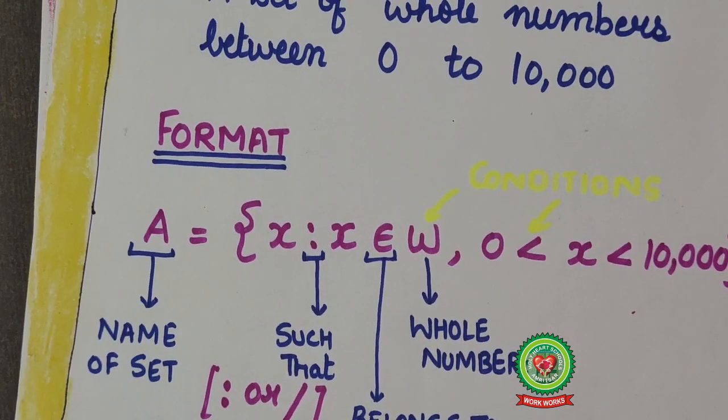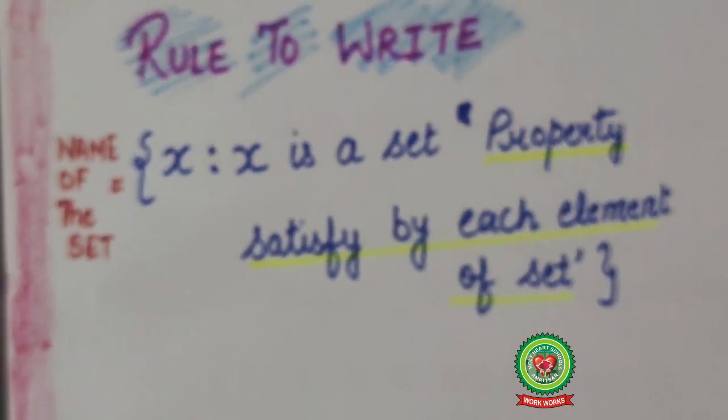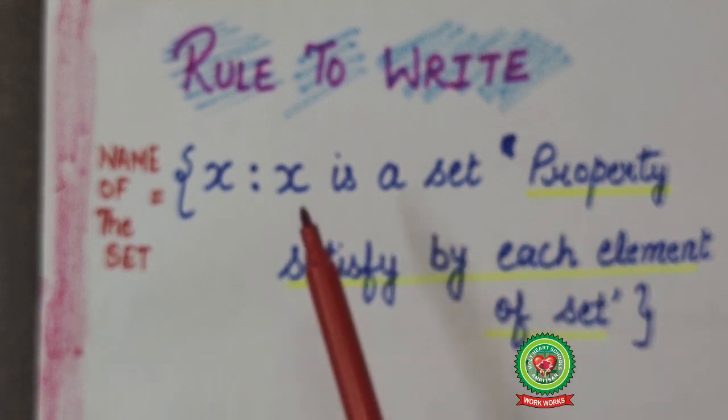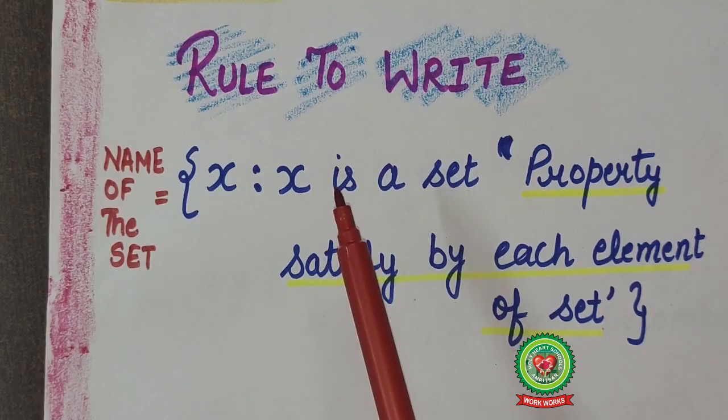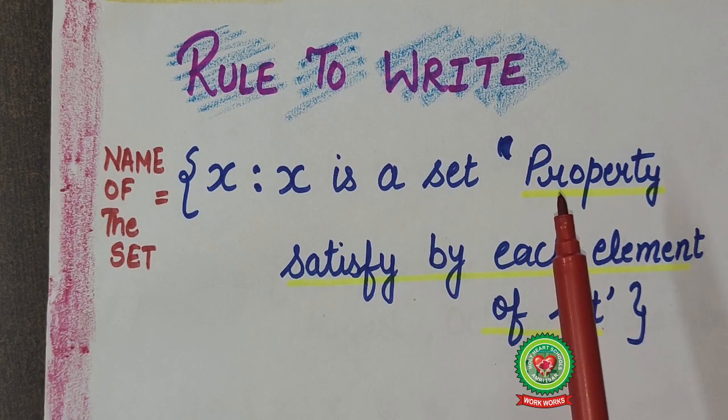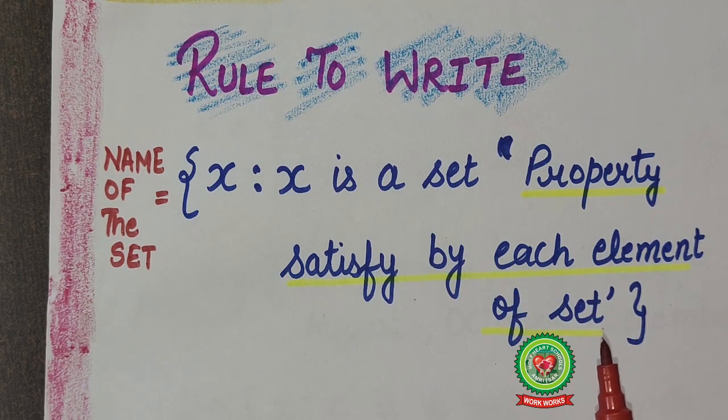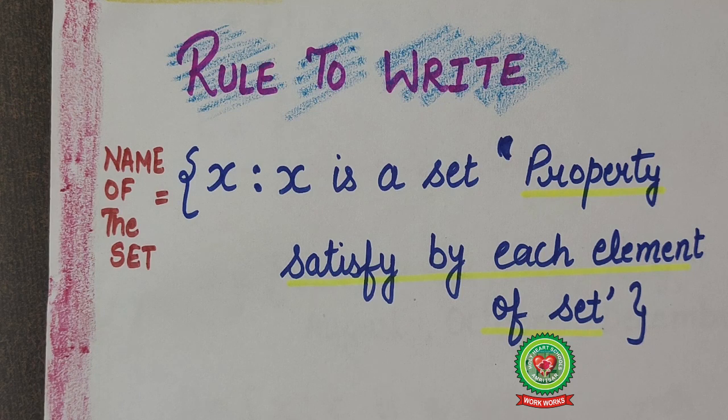So you understood the format to write in set builder form. That is first of all we will write name of the set. Then we will write x such that x is a set. Then we will write in commas property that should satisfy by each element of the set. Now here we have added certain conditions in this method. That is why it is also known as a rule method.